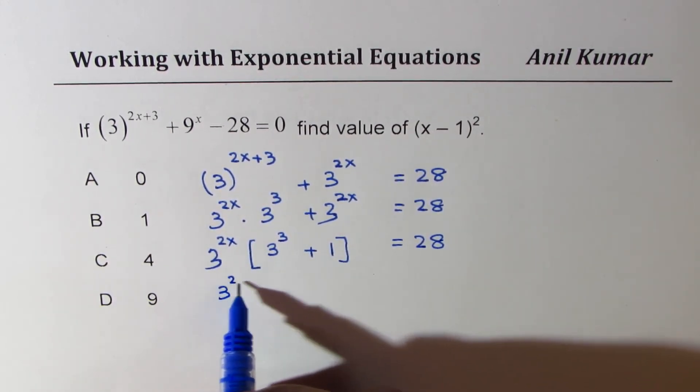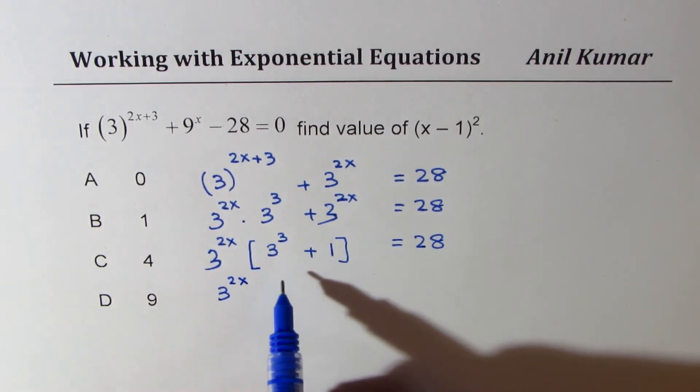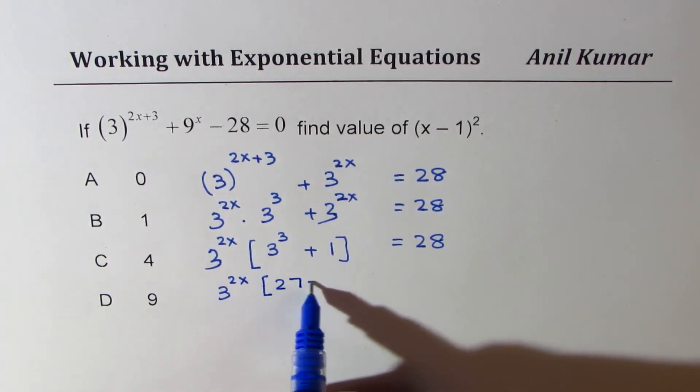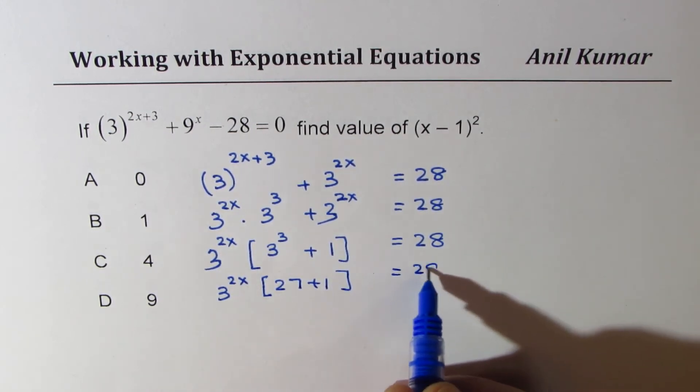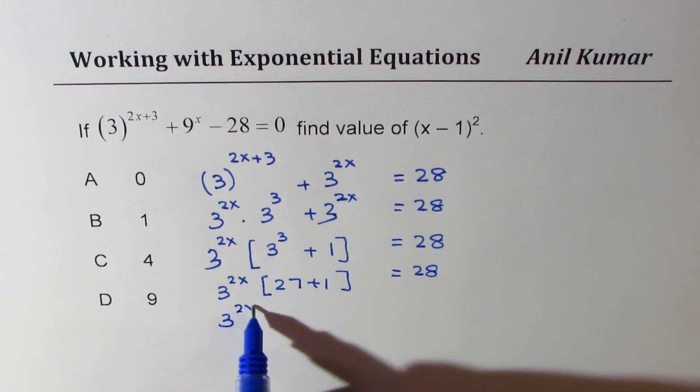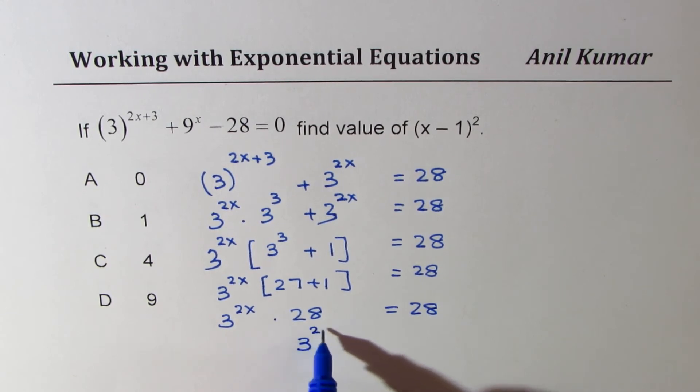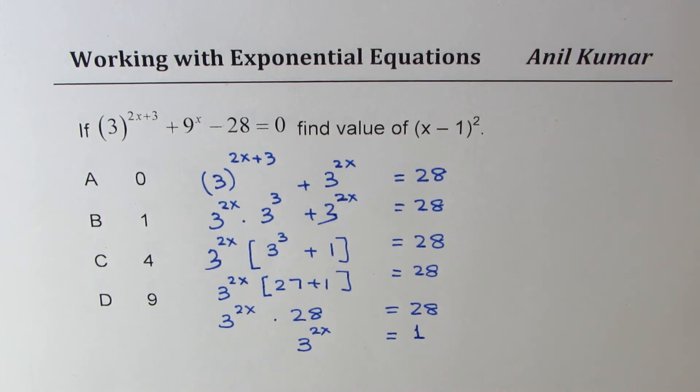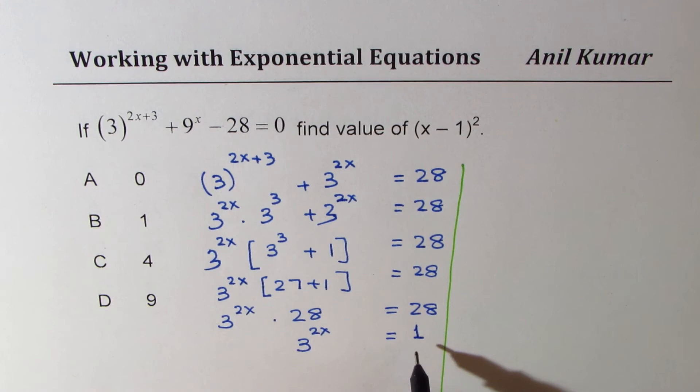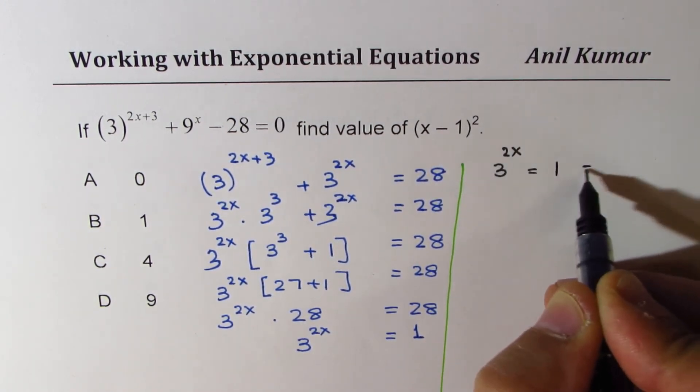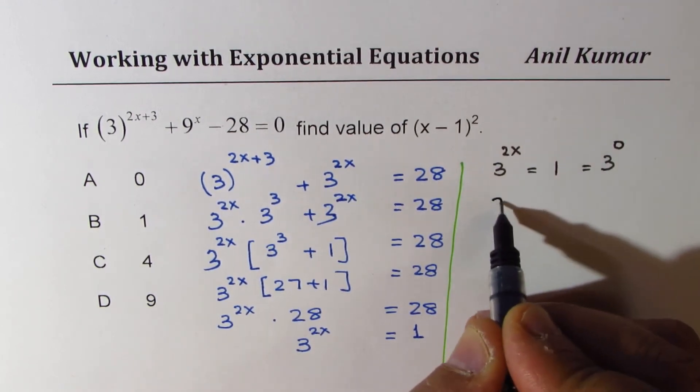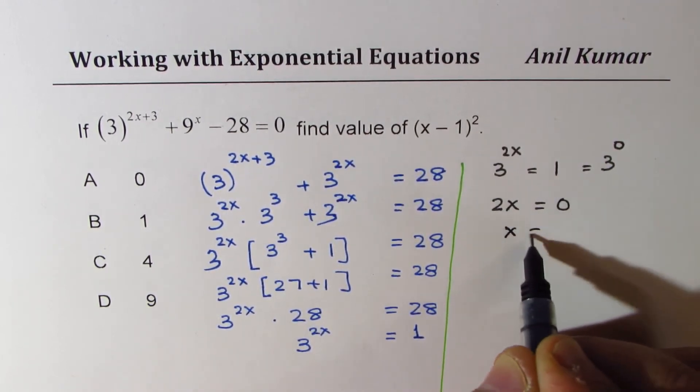Now, 3 to the power of 2x, now this is times 27 plus 1, which is also 28. Or you could say 3 to the power of 2x times 28 equals to 28, or 3 to the power of 2x is equal to 1. Now when is that possible? When is 3 to the power of 2x equals to 1? Clearly, 2x should be 0. So 3 to the power of 2x equals to 1 means it is 3 to the power of 0. So 2x should be equal to 0, or x is equal to 0.